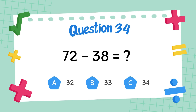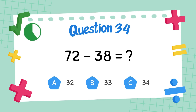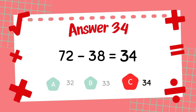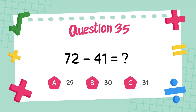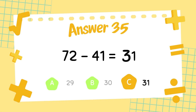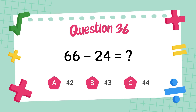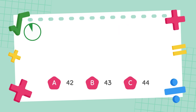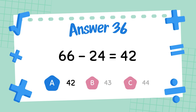What is seventy-two minus forty-eight? The answer is thirty-four. What is sixty-six minus forty-four? The answer is thirty-seven. What is sixty-six minus twenty-four? The answer is forty-four.